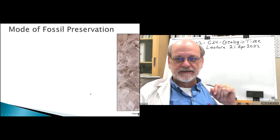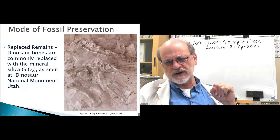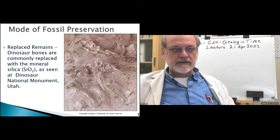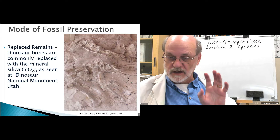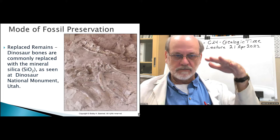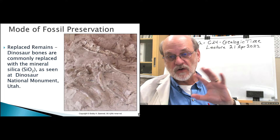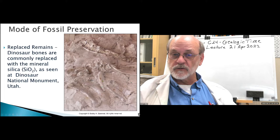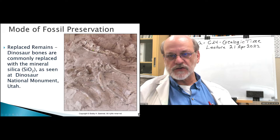Here are some replaced remains from Dinosaur National Monument in Utah. You can see the outlines of bones — what looks like a backbone here. Very often you have a kill area or die-off area where lots of animals are packed together, making it difficult to tell which bones come from which animal. All of these have been remineralized with other materials, so all you see is the shape.